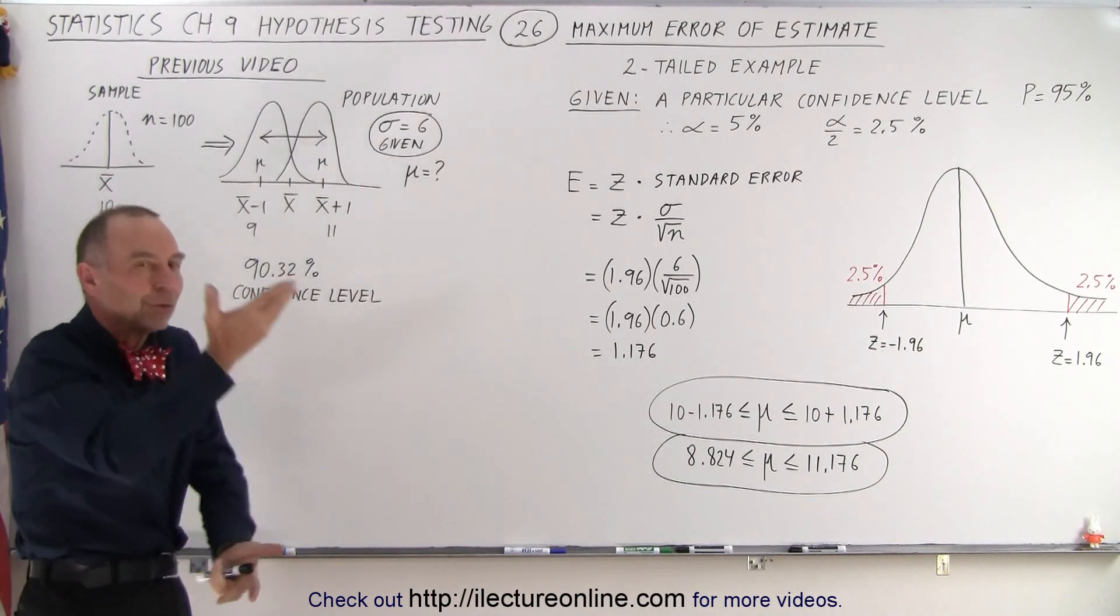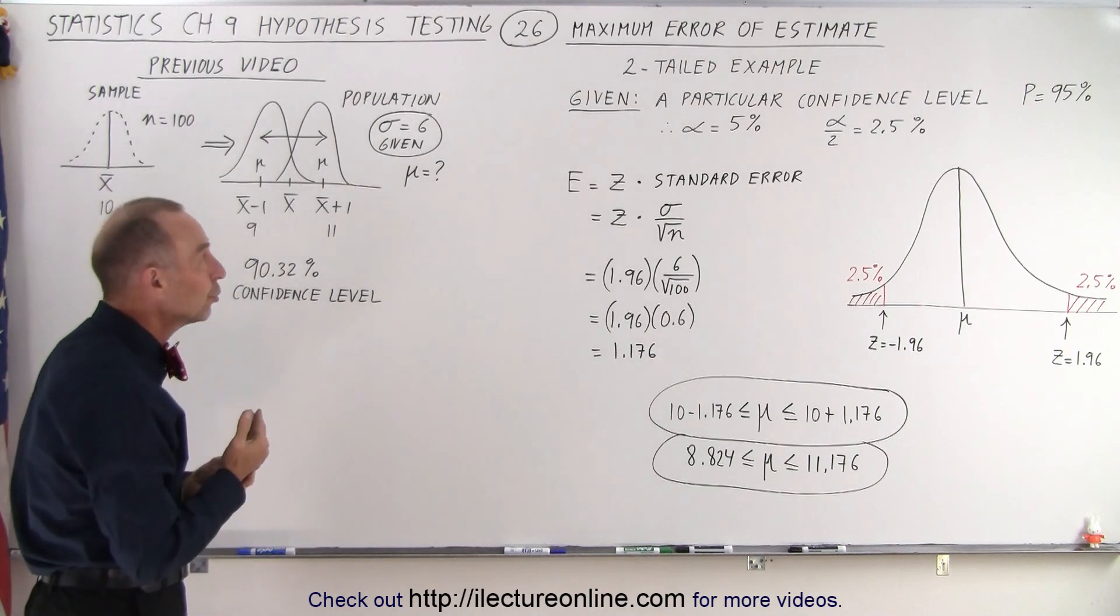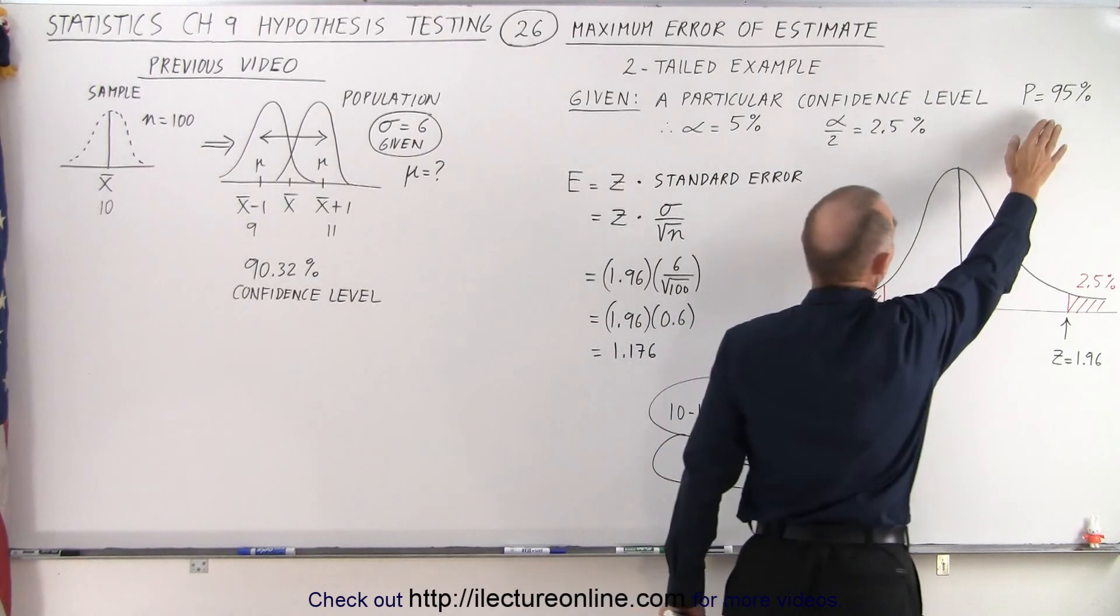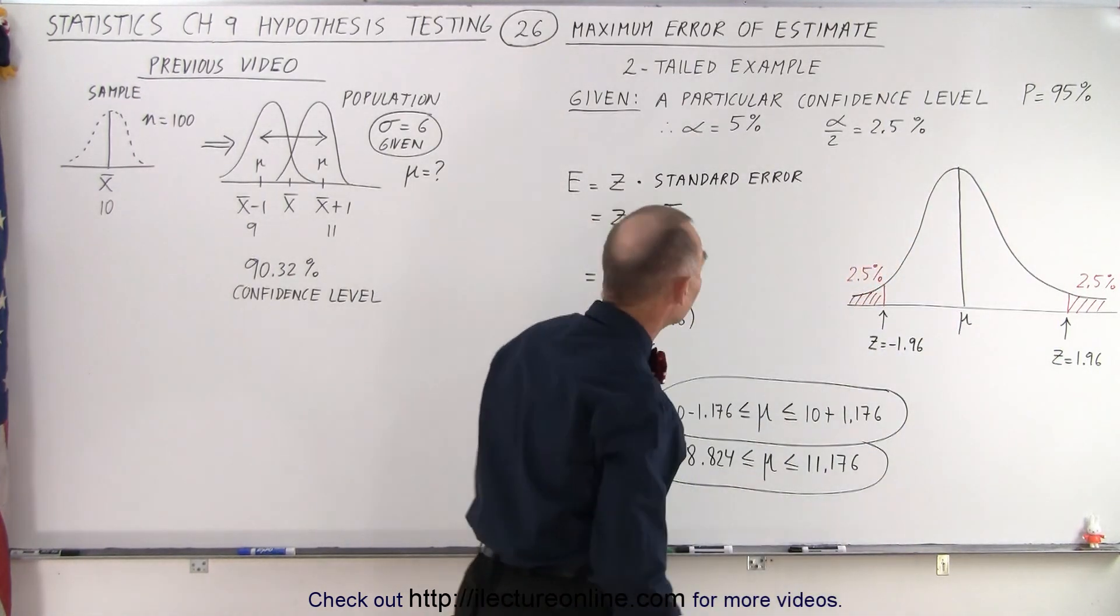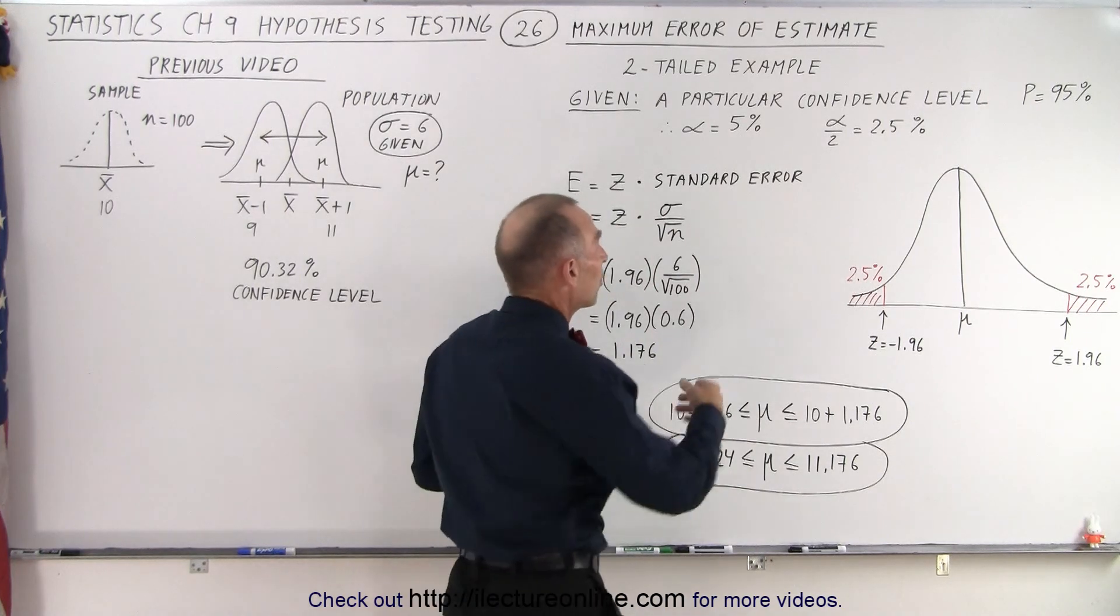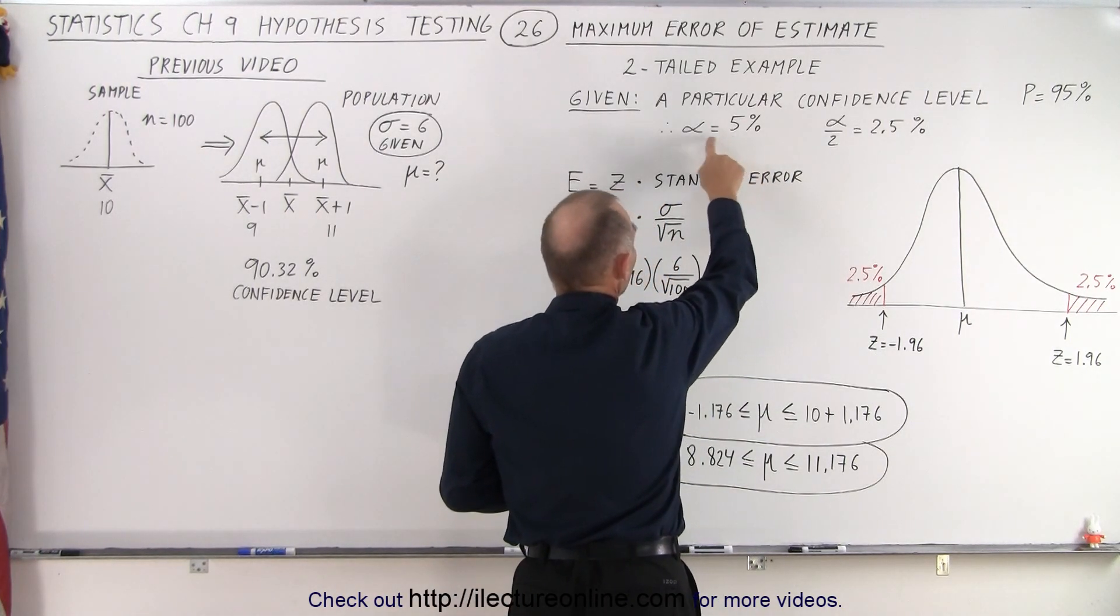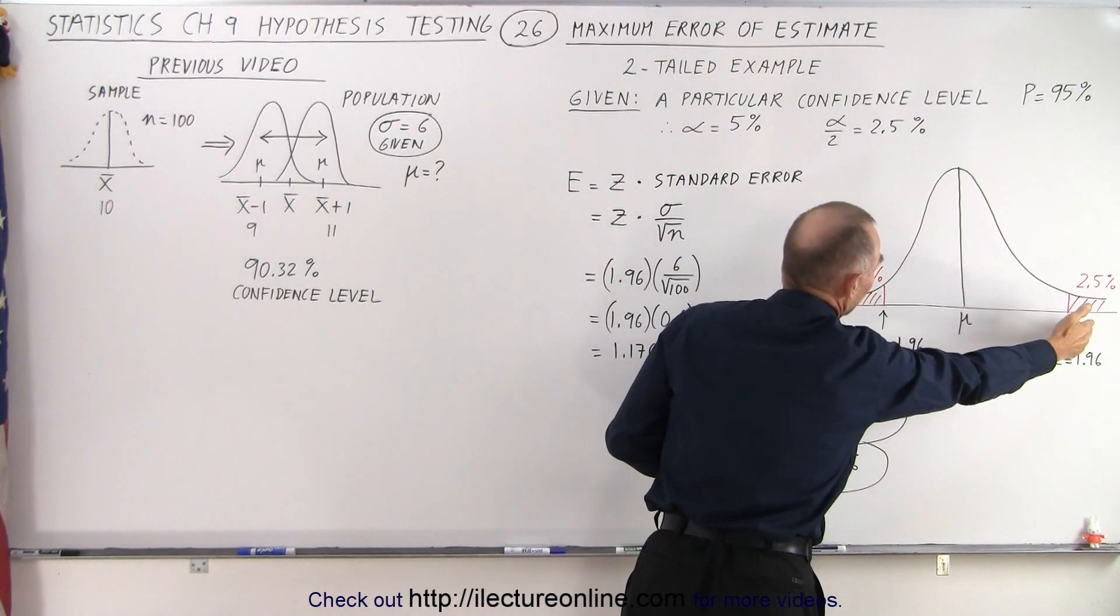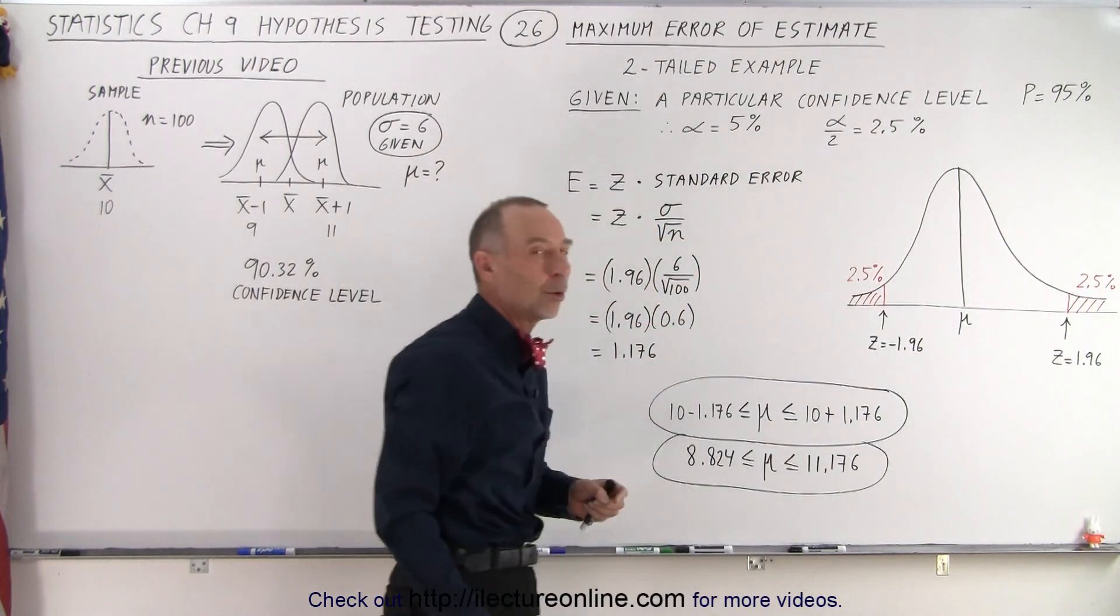In this video, we're going to turn things around. What we're going to do is assume a confidence level, let's say 95%, and we're going to use a two-tailed example, which means the remaining 5%, that's the level of significance, is divided in two to get 2.5% on the high end and 2.5% on the low end.